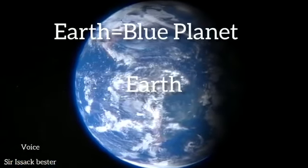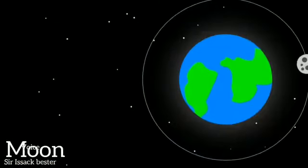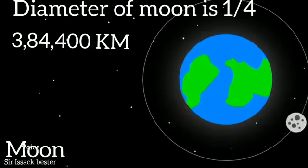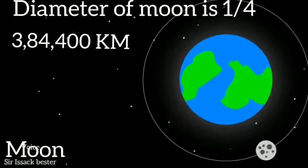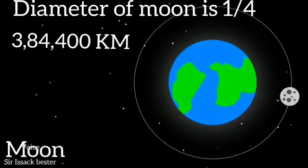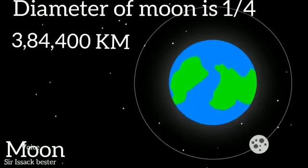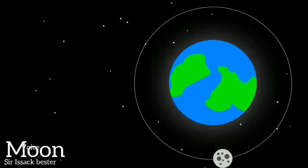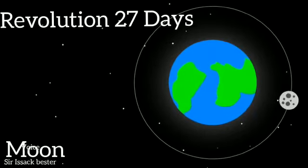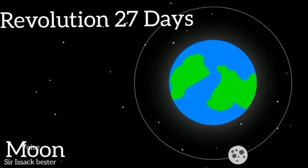With its two-thirds of its surface covered with water, the earth appears blue from space and is called the blue planet. The moon's diameter is one-fourth of that of the earth. It is 3,84,400 kilometers away from earth and completes a revolution around the earth in about 27 days.